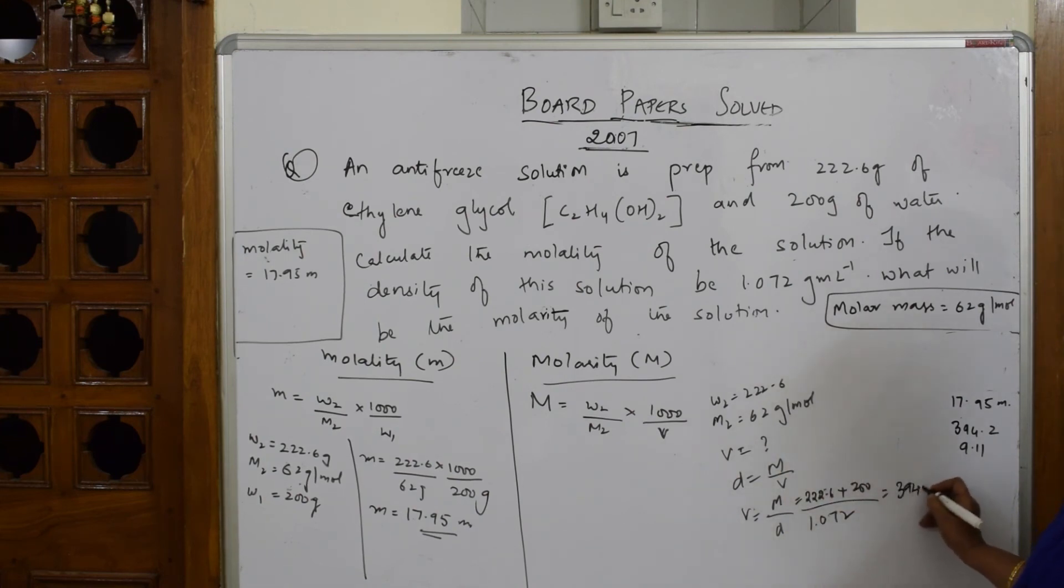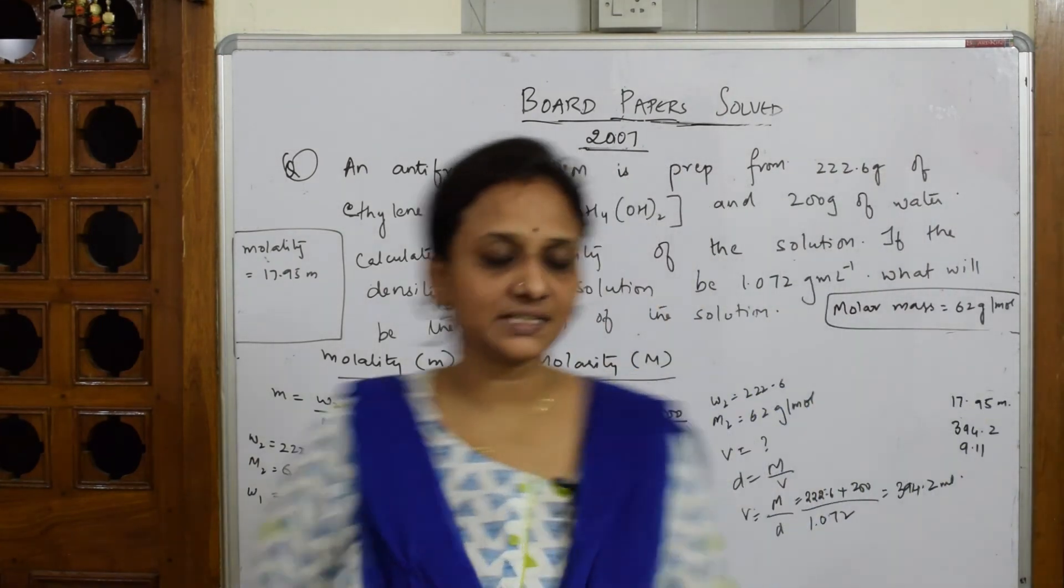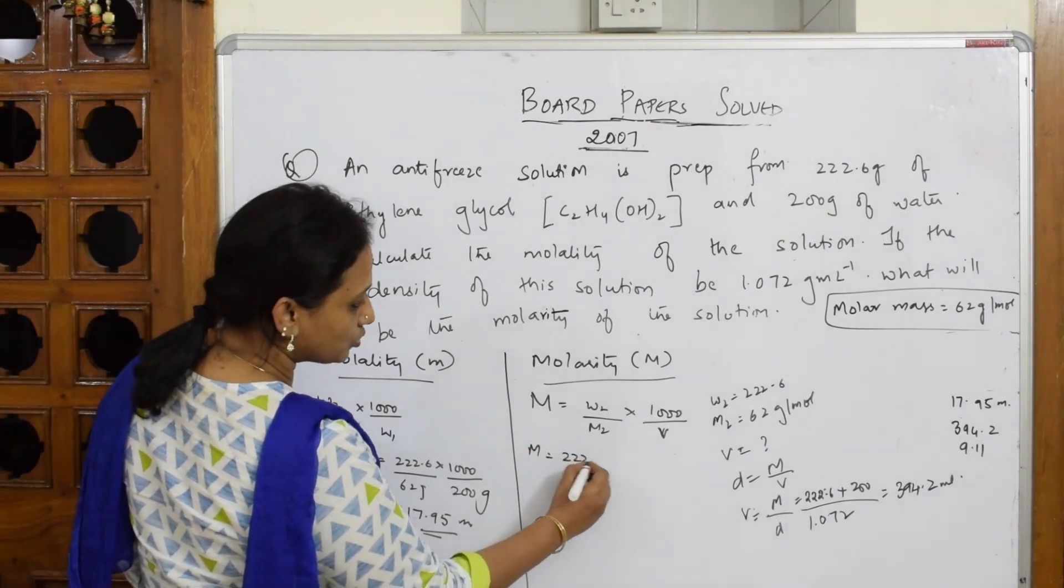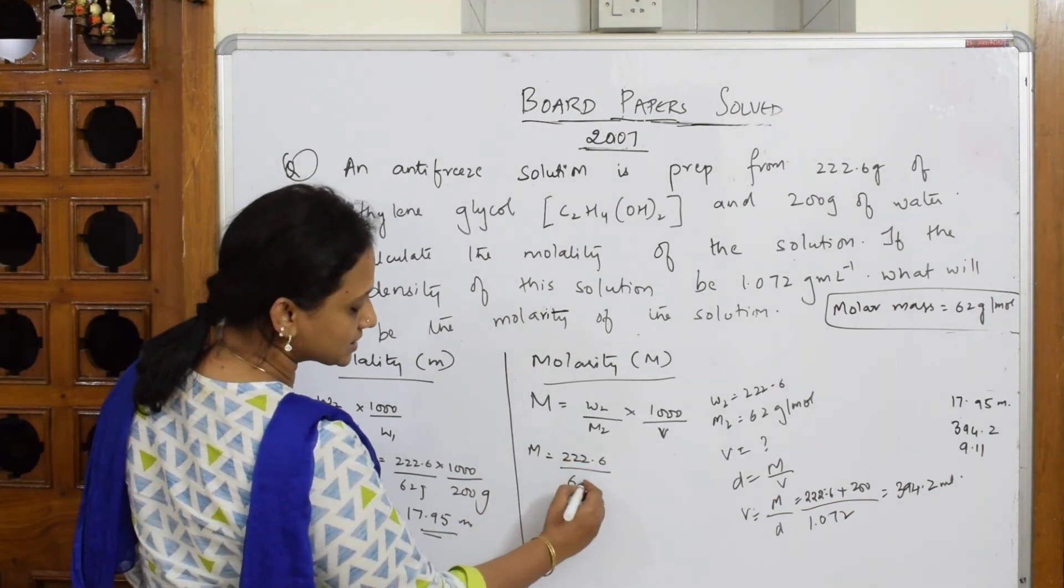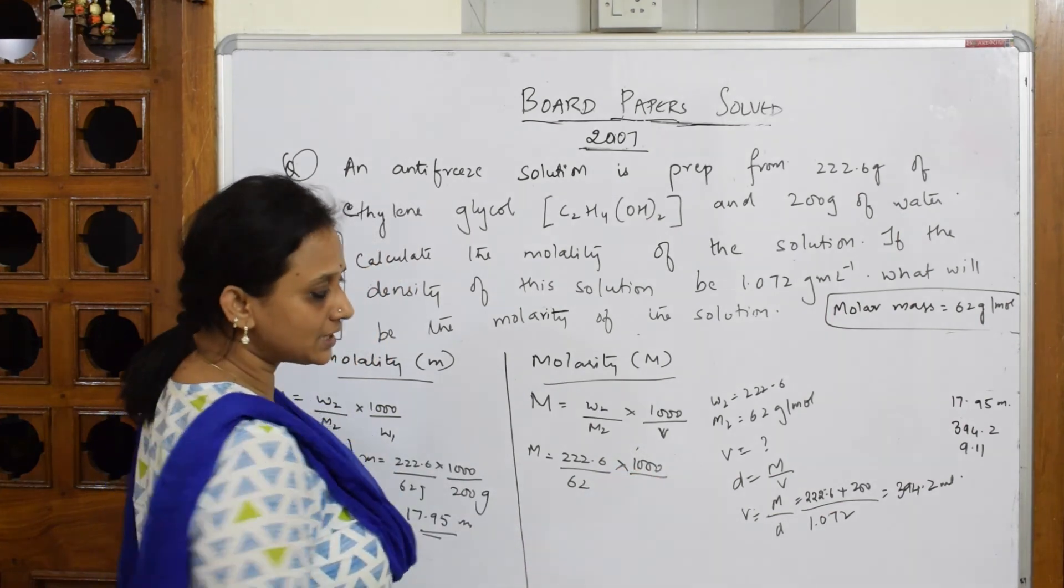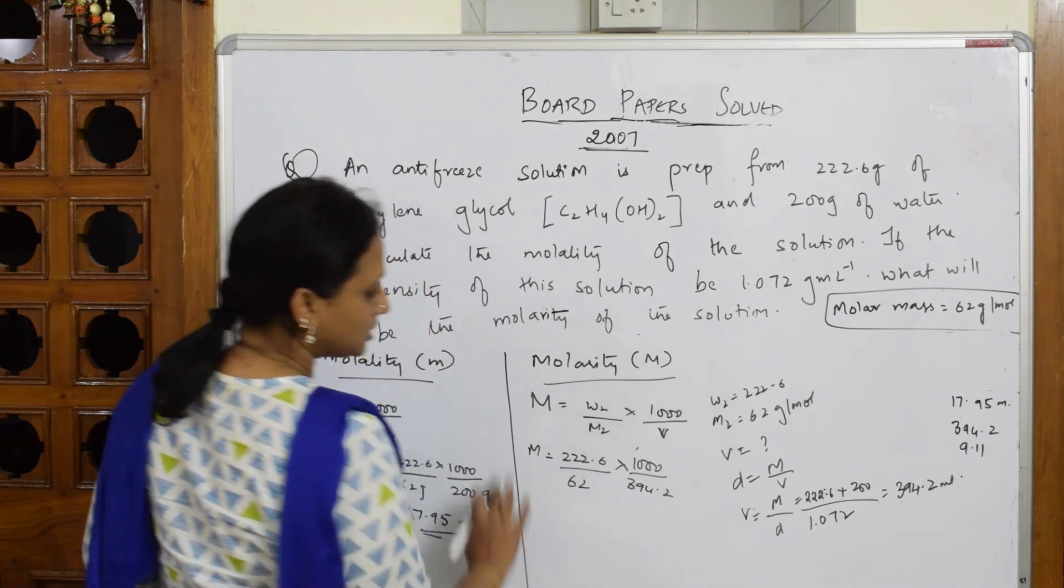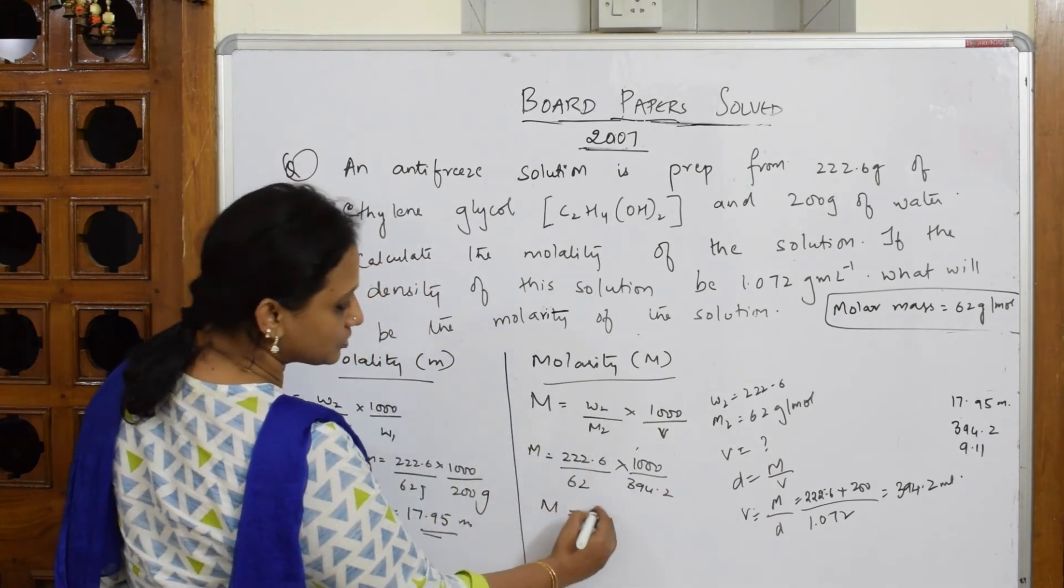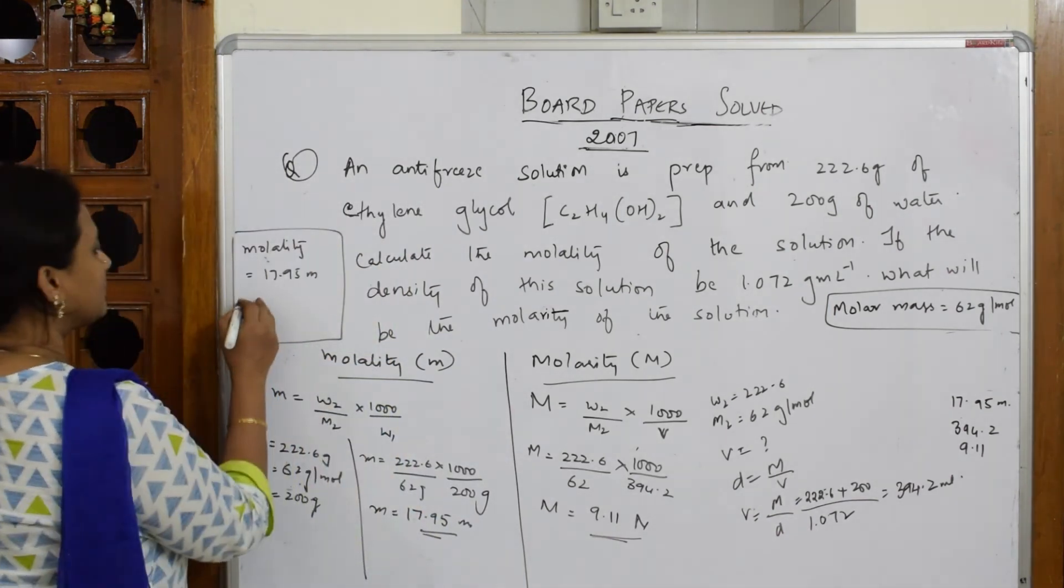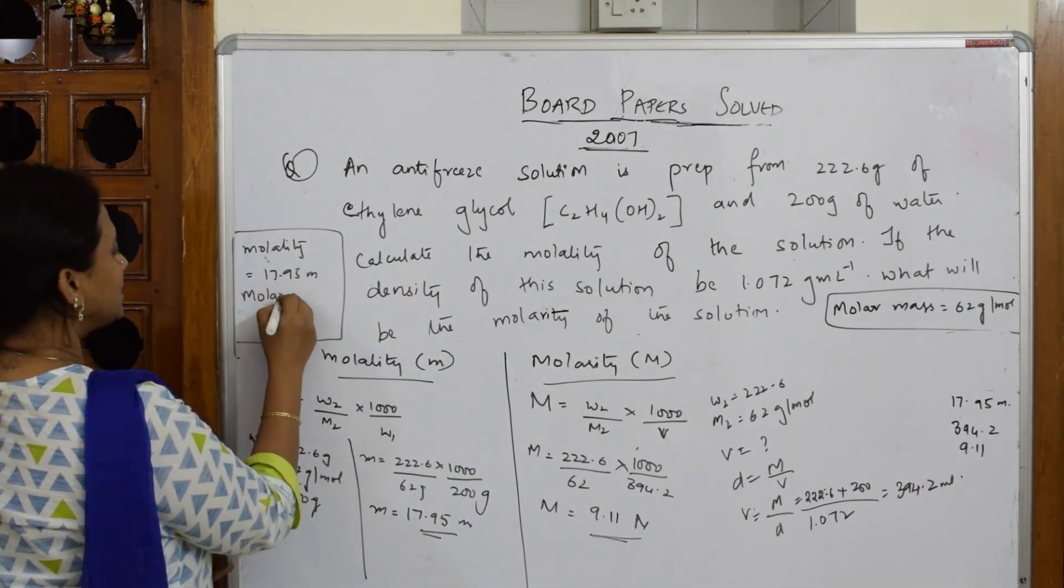Now everything is ready. I'll substitute in the formula. M equals 222.6 by molecular mass 62 into 1000 divided by volume 394.2. When I solve this, I get an answer of 9.11 molar solution. So I have got molarity as 9.11 capital M. This is small m for molality, capital M for molarity.